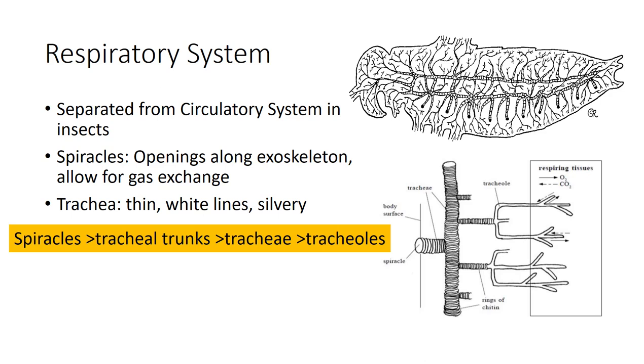The insect respiratory system is made up of a series of tubes that originate from spiracles, openings of the exoskeleton that allow for gas exchange and extend throughout the body. Internally, the tubes, or trachea, appear as thin white lines throughout the hemocele, and are particularly noticeable surrounding internal organs. Trachea deliver oxygen to internal organs and tissues through the tracheoles.